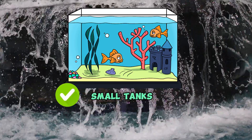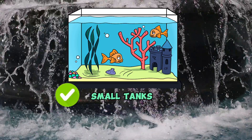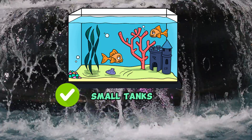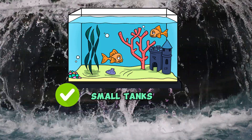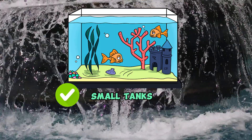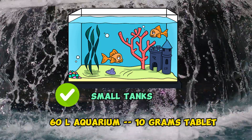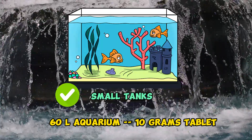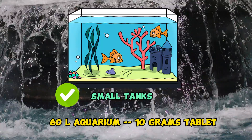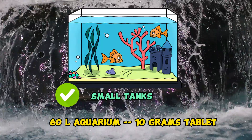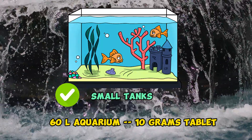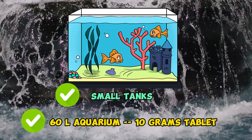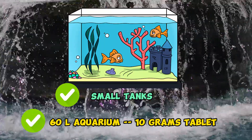Oxygen tablets can still be a useful solution for small quantities of water like small tanks. For example, for a 60-litre aquarium, only 10 grams of this product would be needed to provide the required dissolved oxygen levels. This looks good and feasible.